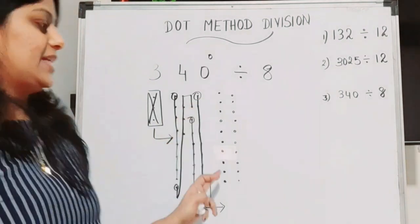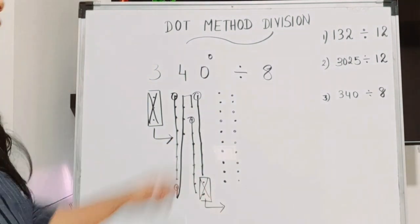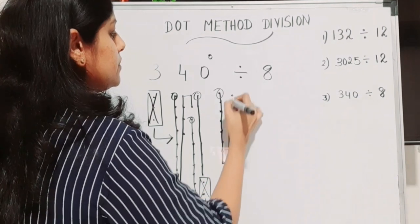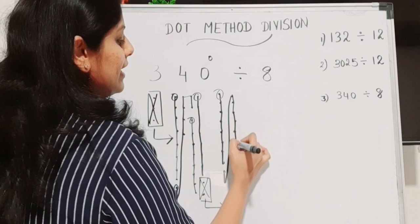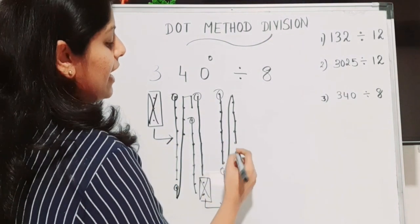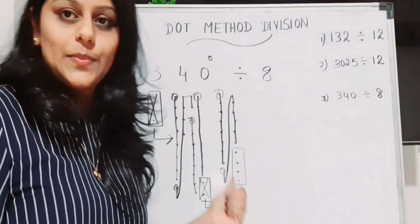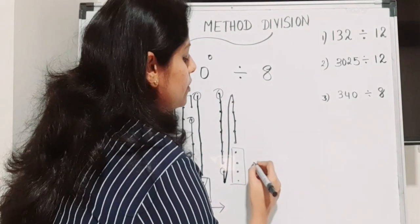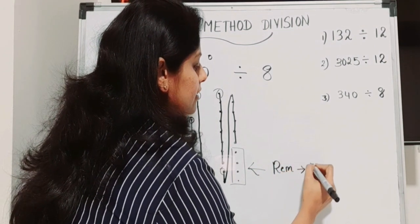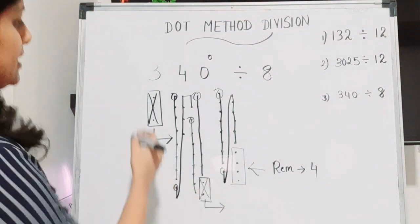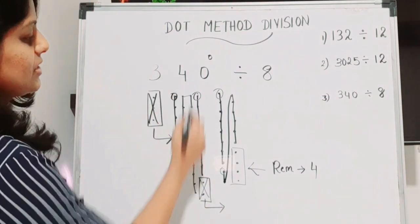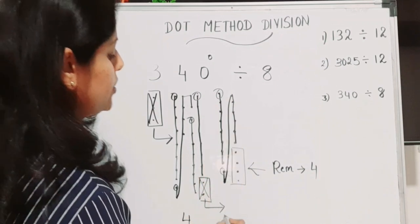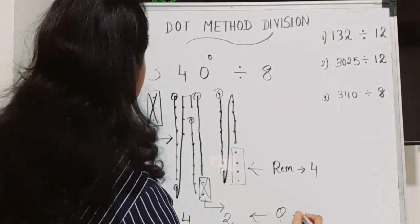We now have 20 dots in the ones column. We form groups of 8: that's group one and group two, using 16 dots, leaving 4 dots remaining. There is no further column to move them to, so 4 becomes the remainder. Counting beginnings: the hundreds column has none, the tens column has four, and the ones column has two. The quotient is 42.